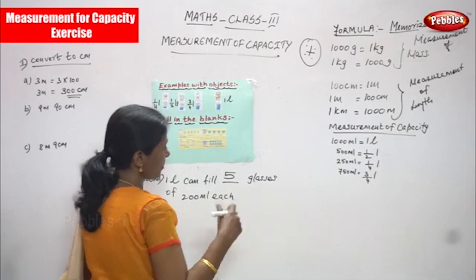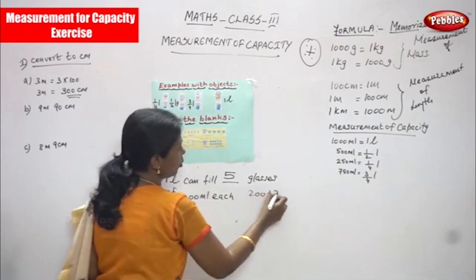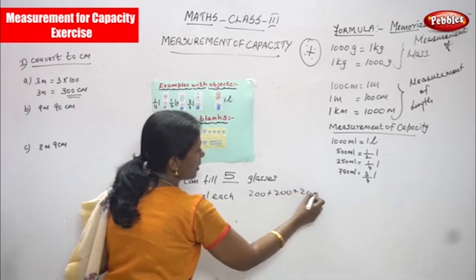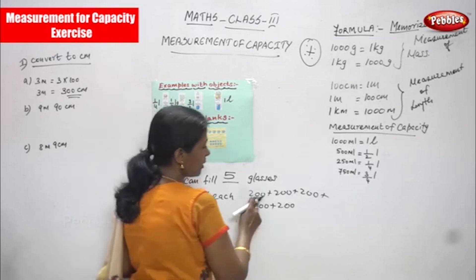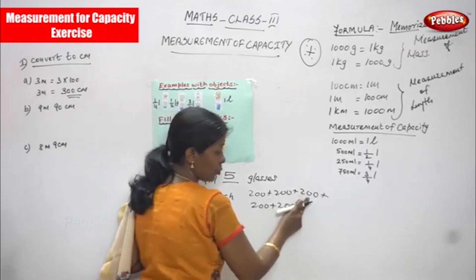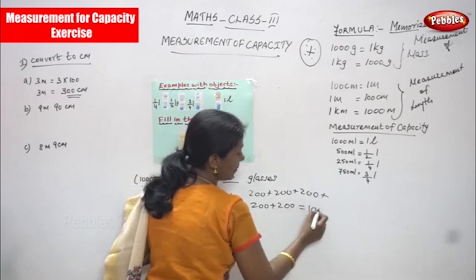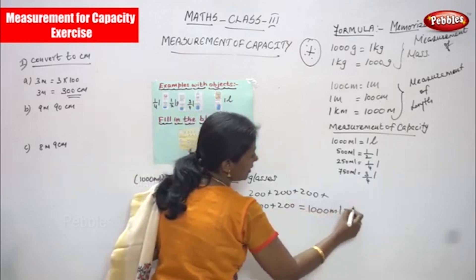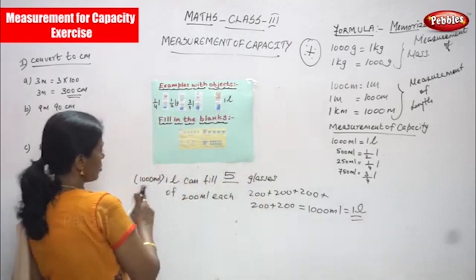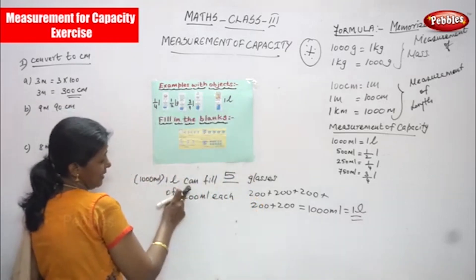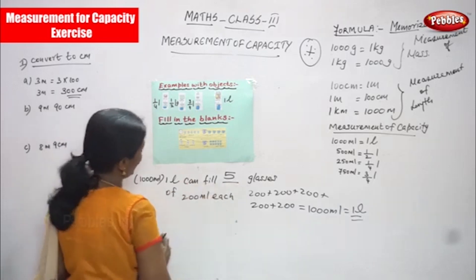So you can add or else you can multiply. 200 plus 200 plus 200 plus 200 plus 200 ml: 400, 600, 800, 800 plus 200 is nothing but thousand ml or else one liter. So thousand ml is nothing but one liter — one liter can fill five glasses of 200 ml each. This is the right answer.